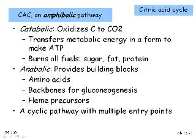Glycolysis is catabolic — it breaks down sugar. Gluconeogenesis is anabolic — it builds up sugar. The pentose phosphate pathway is principally anabolic because it's producing things for synthesis. But the citric acid cycle — there's no way to draw a line; it's both at once. It is catabolic in that it's the principal way the cell uses to oxidize carbon atoms to carbon dioxide. So when you breathe out, that carbon dioxide was mostly produced in the citric acid cycle.